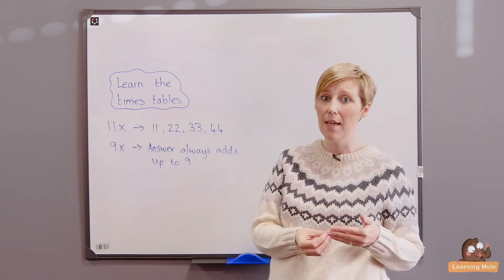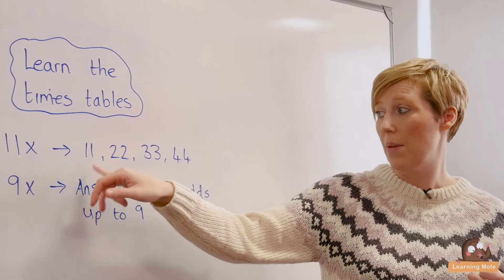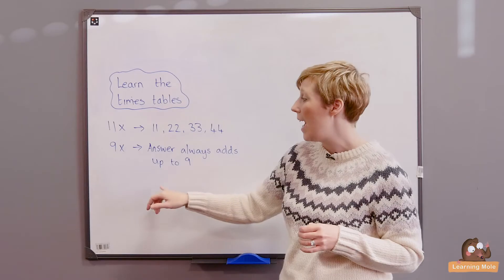Of course, the 11 times tables count up in double digits: 11, 22, 33, 44. And then of course the nine times tables - the answer will always add up to nine.